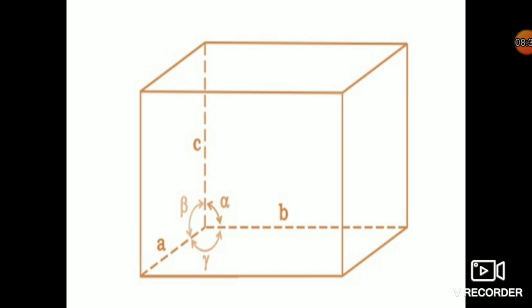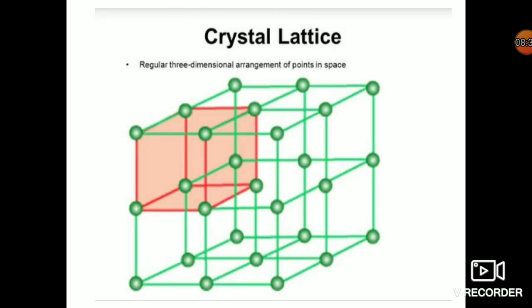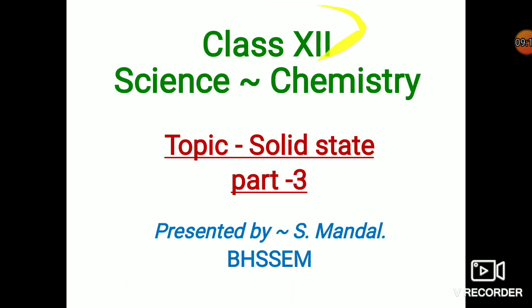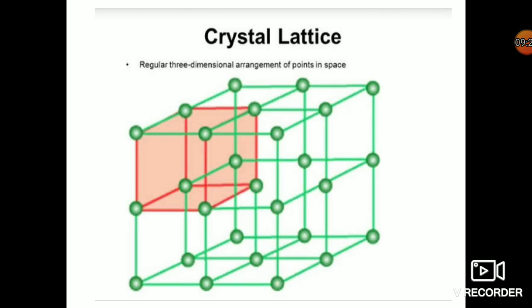Lattice points are joined together using straight lines to identify the geometry of the lattice. In the figure, the spheres are lattice points and some geometrical lines are drawn, but these lines are imaginary — they do not exist experimentally. We draw imaginary lines only to understand the geometry in an easy way. One more point: crystal lattice is a characteristic of crystalline solids only. You will never get a crystal lattice for amorphous solids.